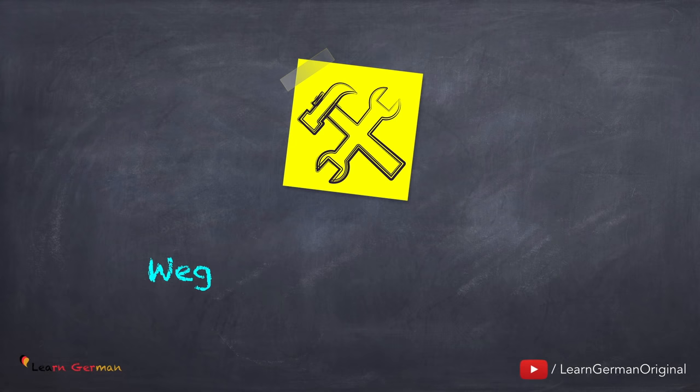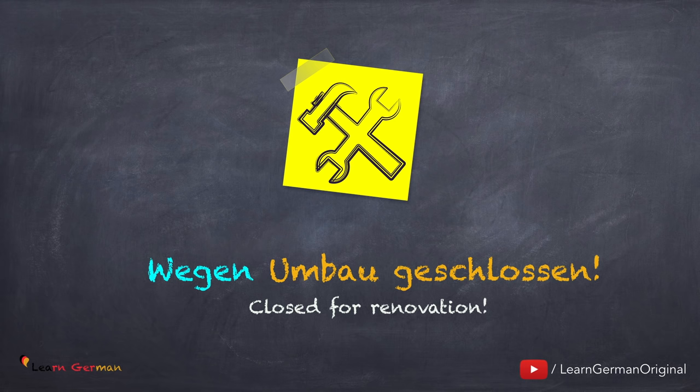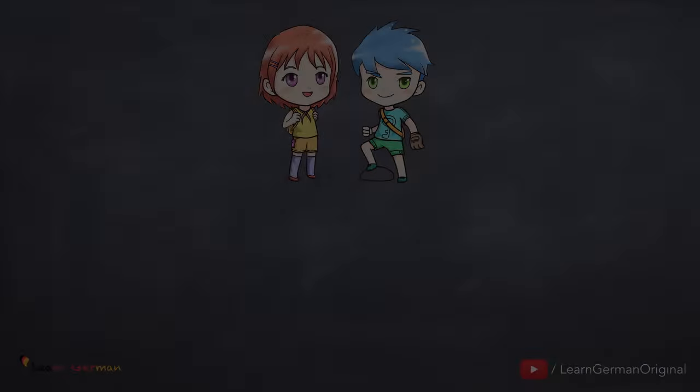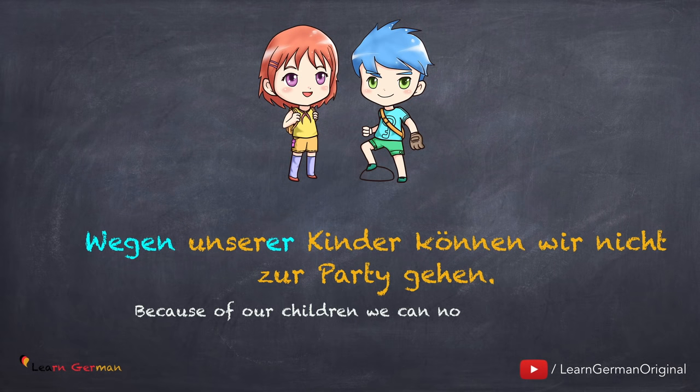Hier ist noch ein Beispiel: Wegen Umbau geschlossen. Auch hier, wo man keinen richtigen Satz hat, sieht man keinen Artikel und keine Genitiv-Endung fürs Nomen. Jetzt schauen wir uns noch ein Beispiel an: Wegen unserer Kinder können wir nicht zur Party gehen. Wenn wir hier einen Artikel haben — zum Beispiel in diesem Fall einen Possessivartikel: 'unserer' — dann benutzen wir mit 'wegen' den Genitivartikel.